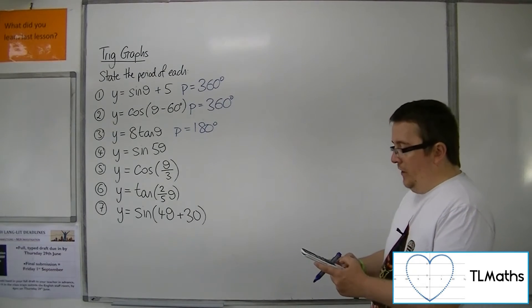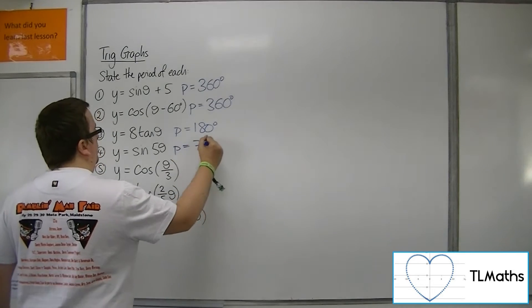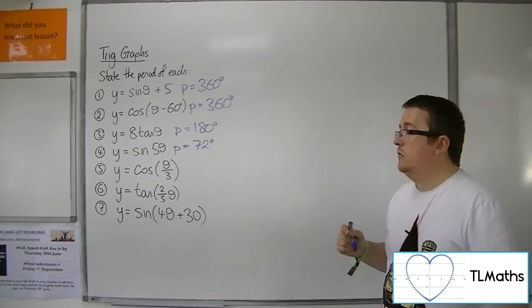So 360 divided by 5 makes 72 degrees. So this graph will repeat itself every 72 degrees rather than every 360.